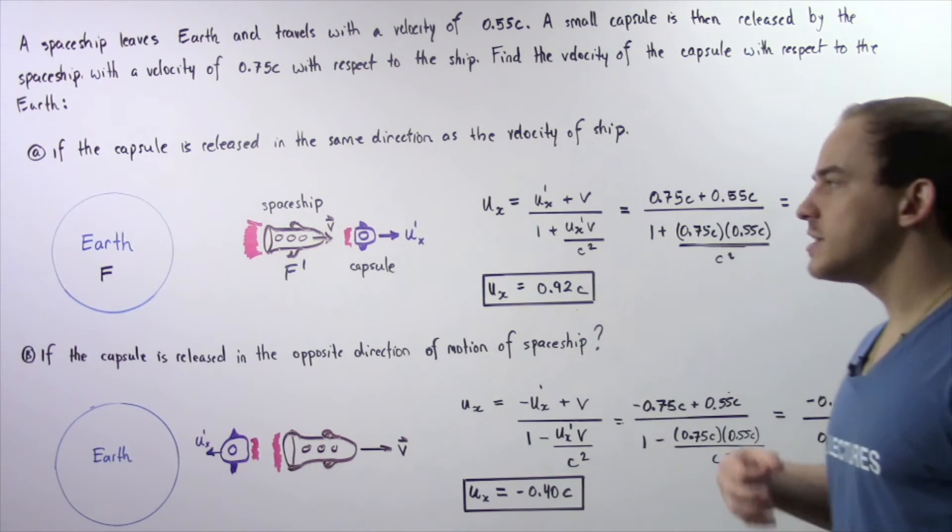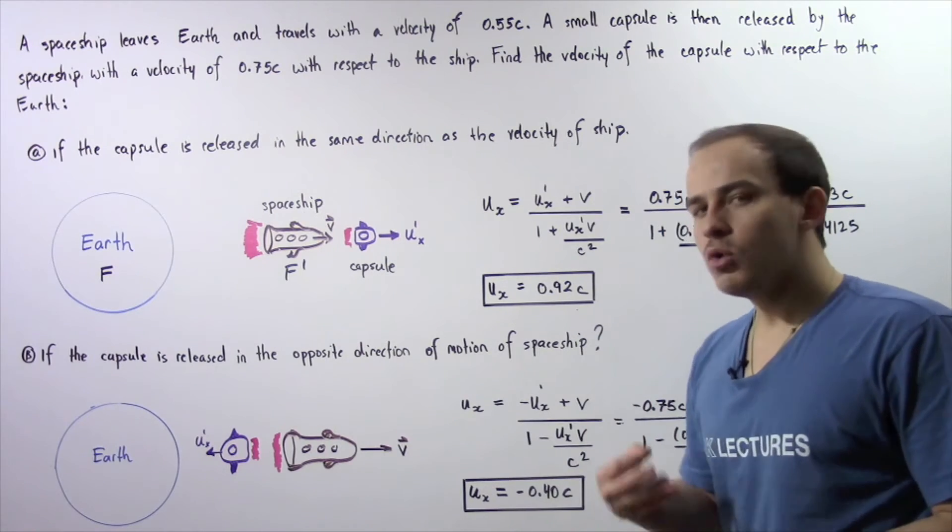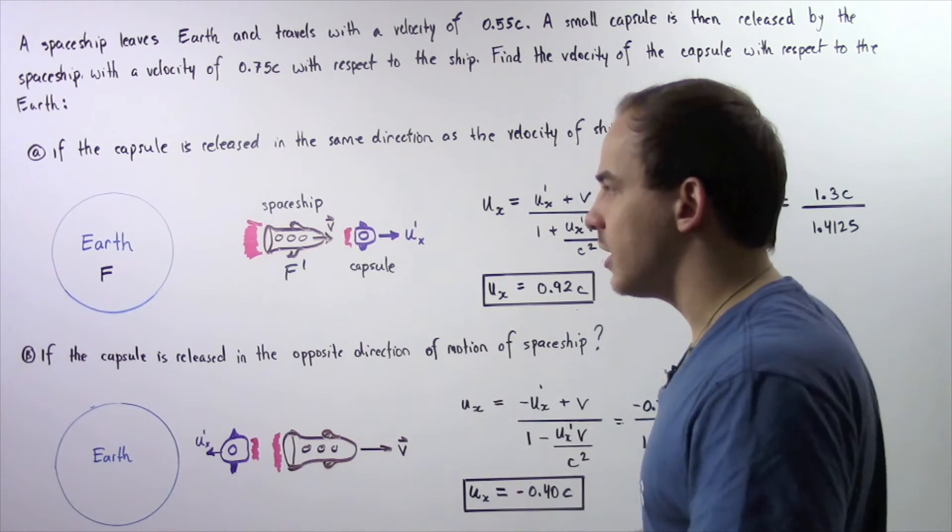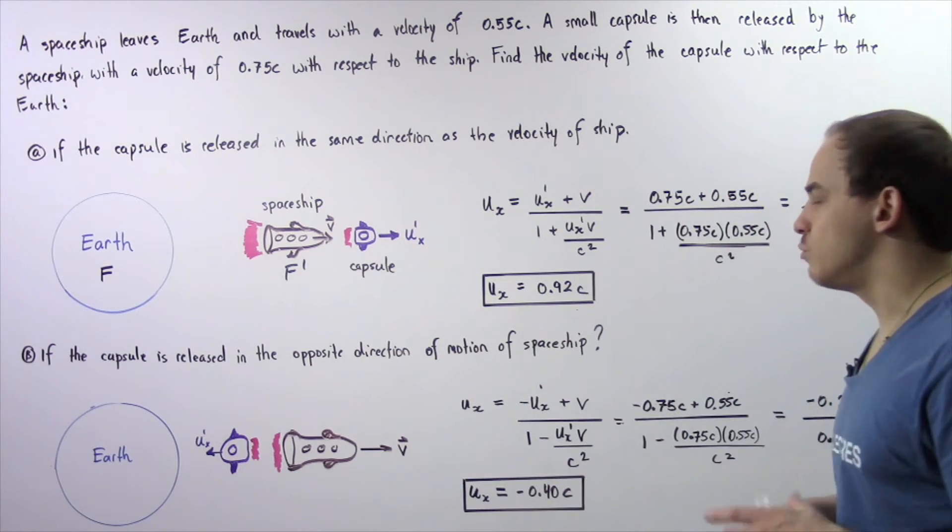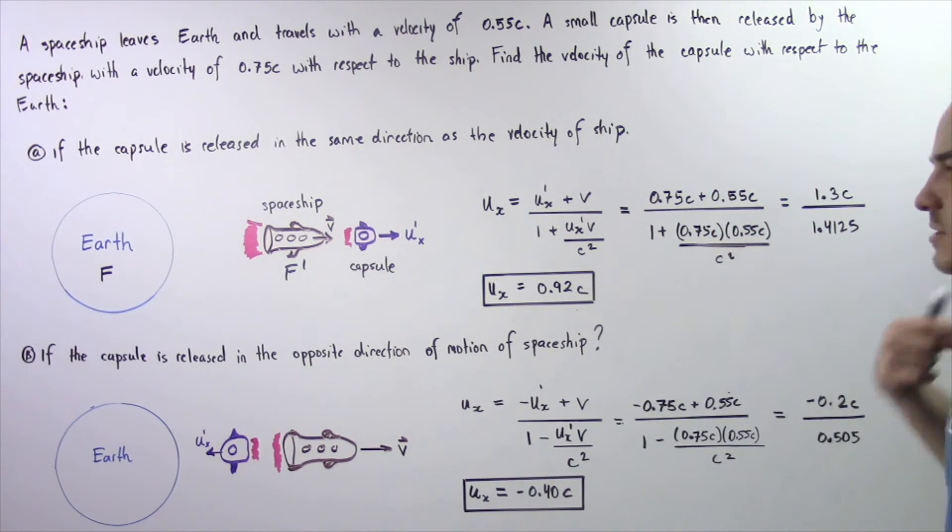That means the speed of the capsule with respect to the stationary Earth is about 92% of the speed of light in a vacuum. Let's move on to part B.